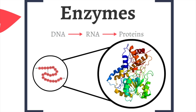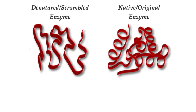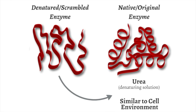This is what Christian Anfinsen studied. He worked with an enzyme called ribonuclease. He reduced the enzyme, destroying the disulfide bonds that keep it in its specific 3D shape. This reduction denatures the enzyme, essentially scrambling it. When he left this scrambled enzyme in a solution of urea, which is a denaturing solution, the enzyme refolded in many different ways by creating all of the disulfide bonds possible. But when the scrambled enzyme was left in a solution similar to its normal cellular environment, the enzyme refolded into only its original shape.